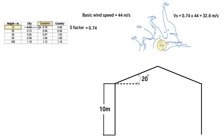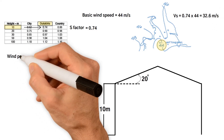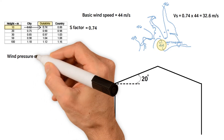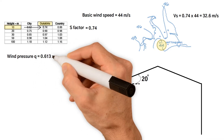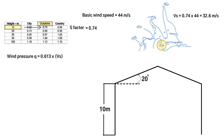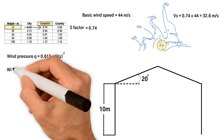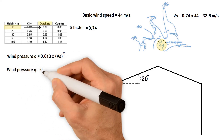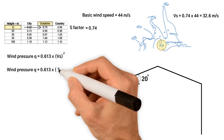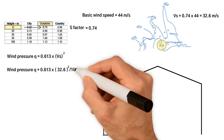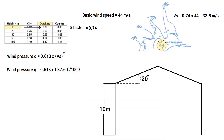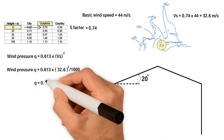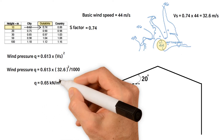As we mentioned earlier, the wind pressure equals 0.613 times the design wind speed squared. Therefore, the wind pressure equals 0.613 times 32.6 squared divided by 1000, which equals 0.65 kilonewtons per meter squared.